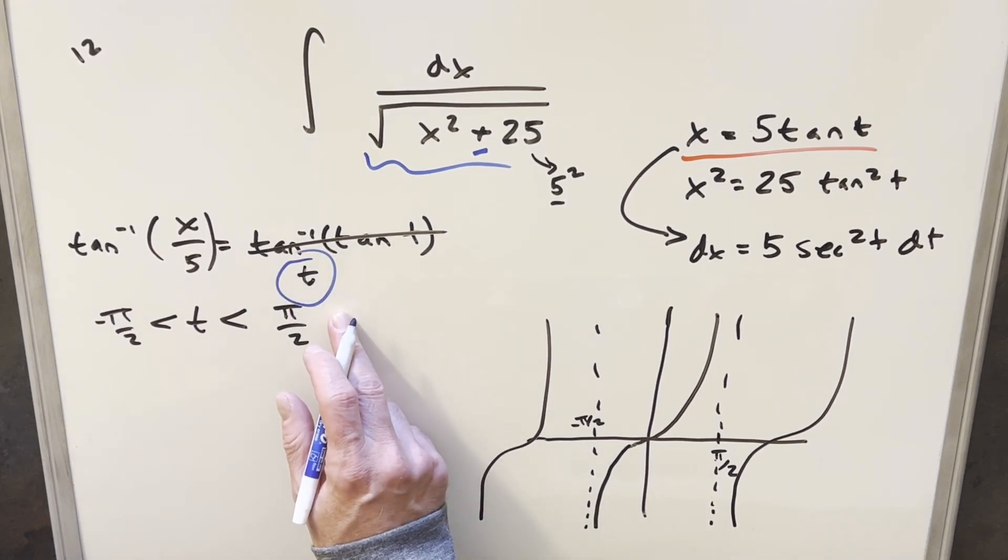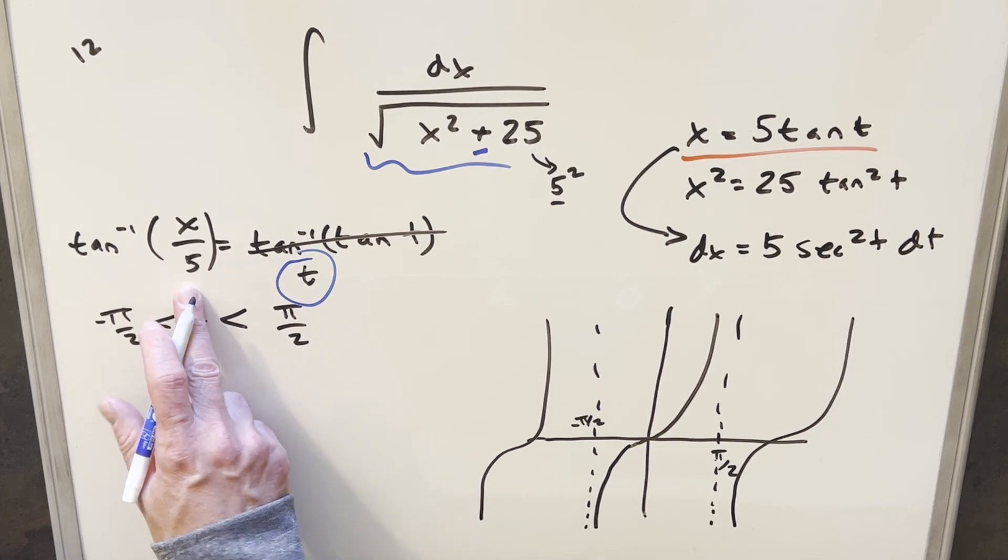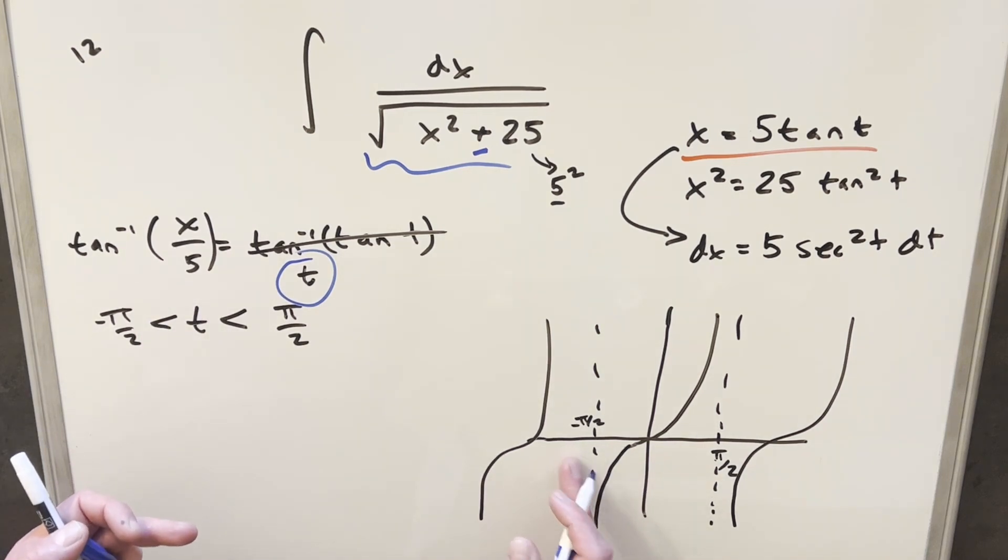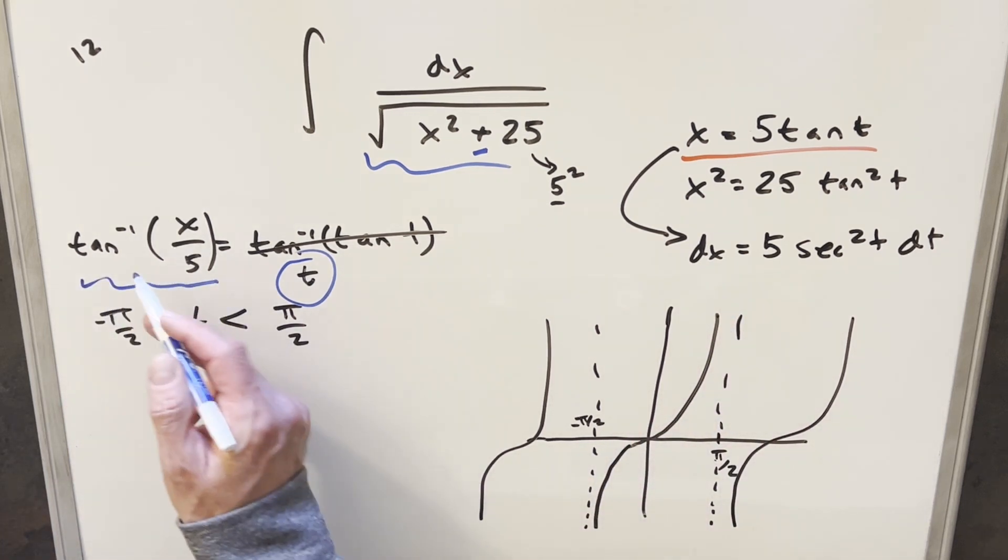But notice here, even though we've restricted t, we haven't restricted x at all. x can still be anything. And just notice between minus pi over 2 and pi over 2, this is going off to infinity in both directions. So we can still get any value. We don't have any restriction on x here.